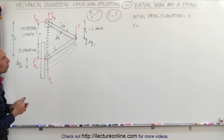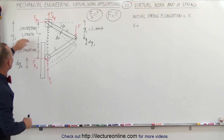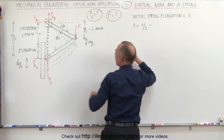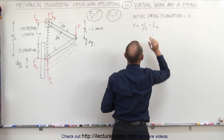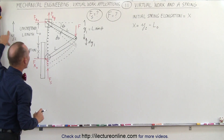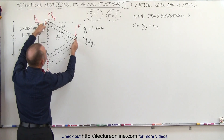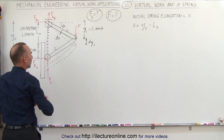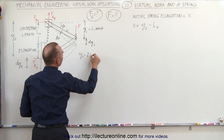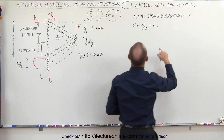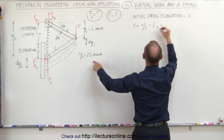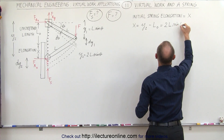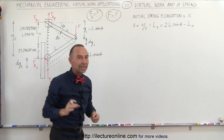The initial spring elongation x equals y2 minus the unstretched length L sub-naught. Since y1 can be defined as L times sine of theta, the total distance y2 is twice that. So y2 equals 2L times sine of theta, and therefore x equals 2L sine theta minus L sub-naught. That is the elongation of the spring.